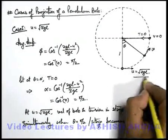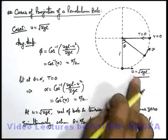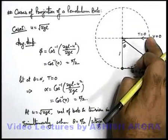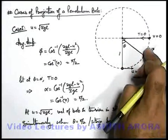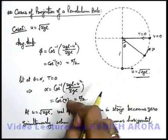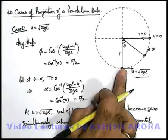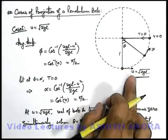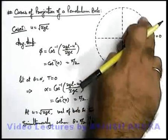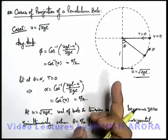So this first case of projection, u = √(2gl), is a benchmarking speed. If we throw the bob with speed u less than √(2gl), it will not be able to reach the horizontal position — velocity becomes zero before that and it continues to oscillate in the lower half of the circle. Tension will certainly never be zero in the lower half. And if we throw the bob with speed more than √(2gl) from the bottom, it will cross this position and reach the upper half of the circle. Let's study those cases in detail.